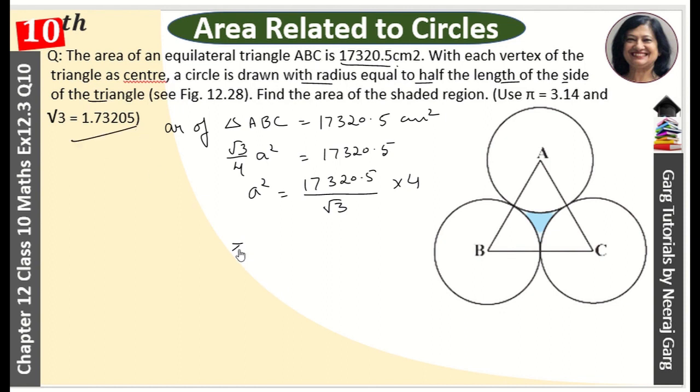So this is 17320.5 into 4 divided by 1.73205.